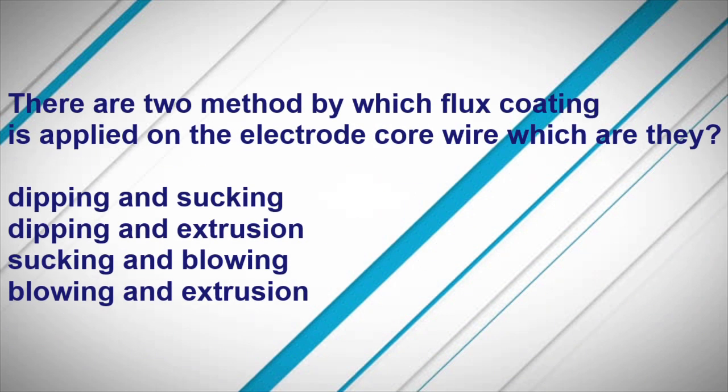There are two methods by which the flux coating is applied on the electrode core wire. Which are they? Dipping and extrusion are the two methods.